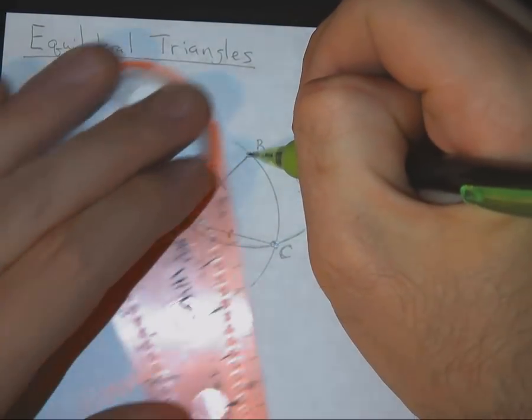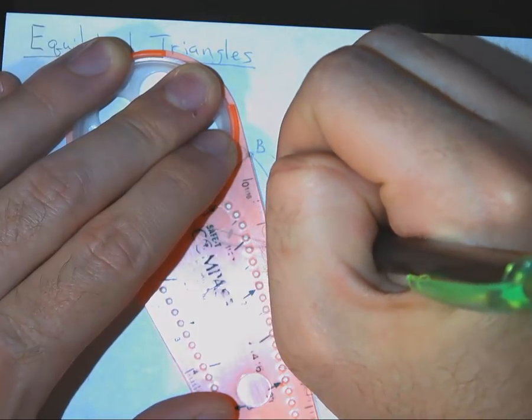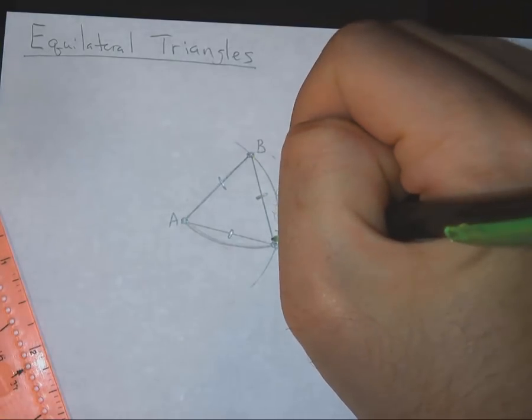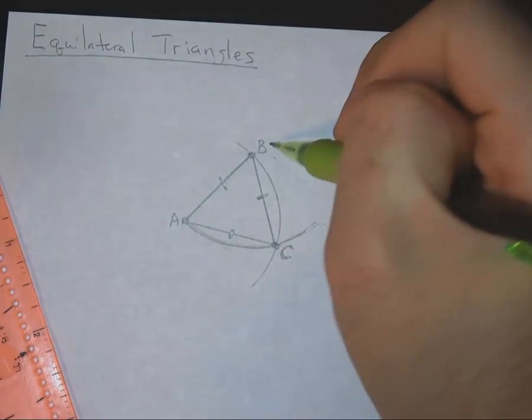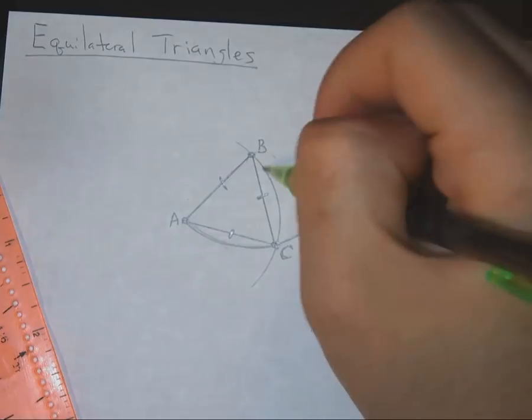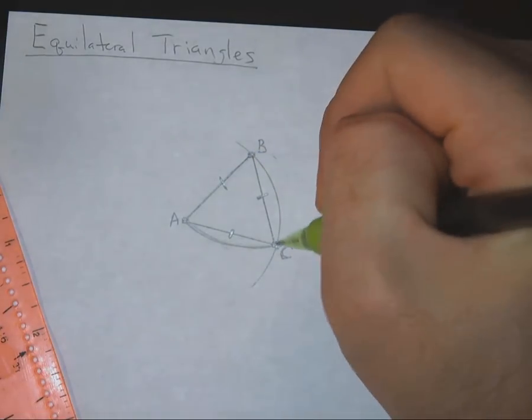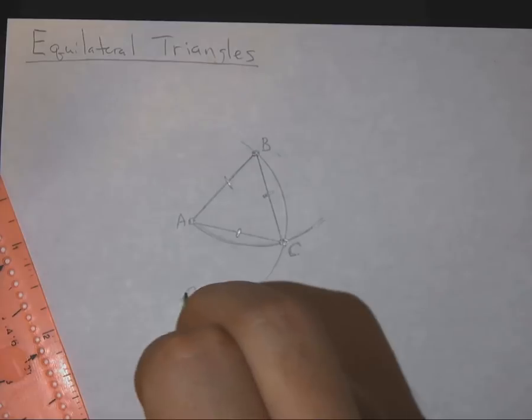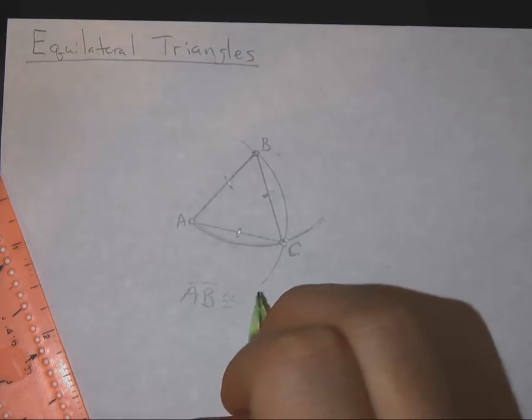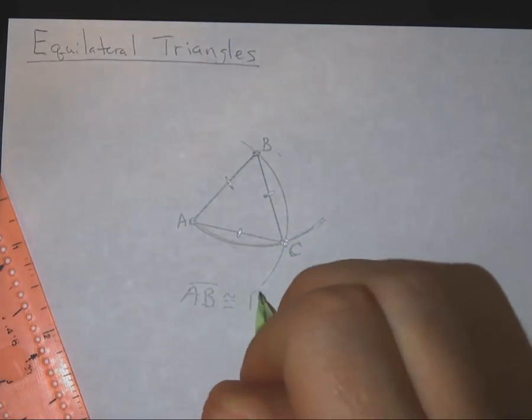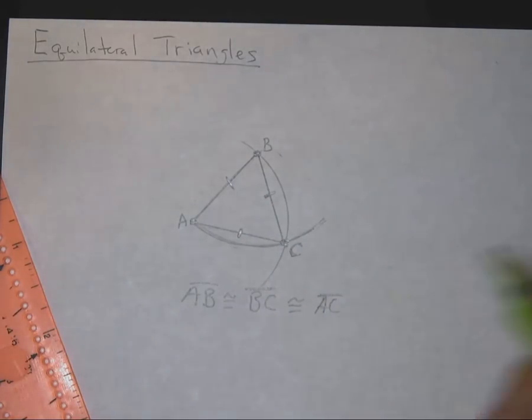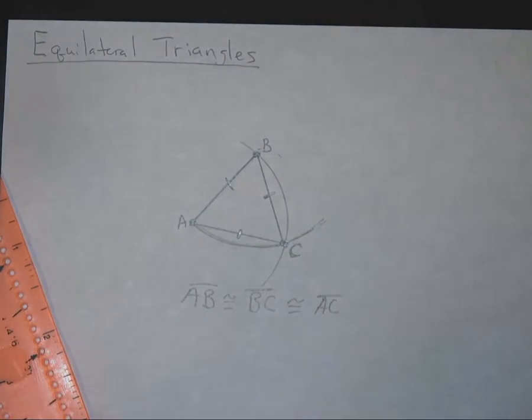And if we were to draw the line segment from B over to C. Well, this line segment BC must be congruent to this line segment here, AC. Because they're all the center of the same circle, basically. They're all the same radius, so we have all these side lengths the same. That would be, the notation for that would be the line segment AB is congruent to the line segment BC, and that's congruent to AC. All those lines are the same, therefore the triangle ABC is equilateral, because all the sides are the same.